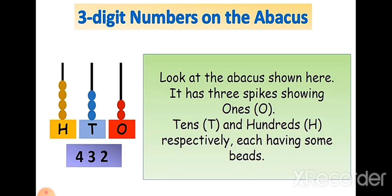Look at the abacus shown here. Can you see the abacus? It has three spikes. This spike showing ones — I have denoted ones with O. Tens — I have denoted tens with T. And hundreds — I have denoted hundreds with H respectively. Each having some beads.